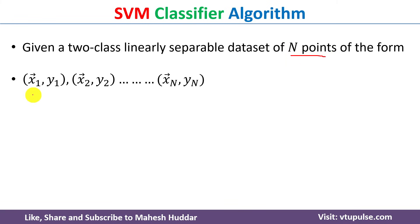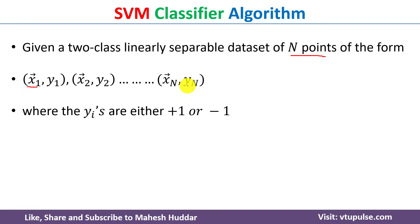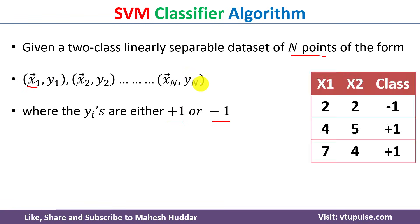Given a two-class linearly separable dataset of N points, we have data points of the form: (x1, y1), (x2, y2), ..., (xN, yN), where x1, x2, ..., xN are the input vectors and y1, y2, ..., yN are the targets. Each target can be either +1 or -1.